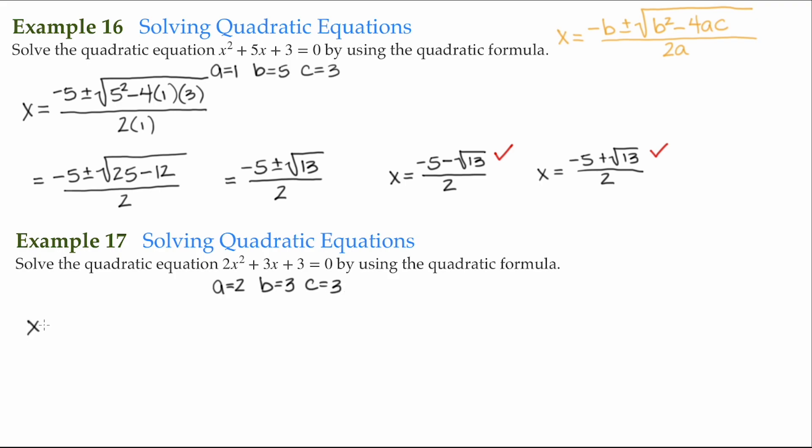We then have x is equal to negative b, which is negative 3, plus or minus the square root of b squared, that would be 3 squared, minus 4 times a, which is 2, times c, which is 3. And this is all over 2a, which is 2 times 2.